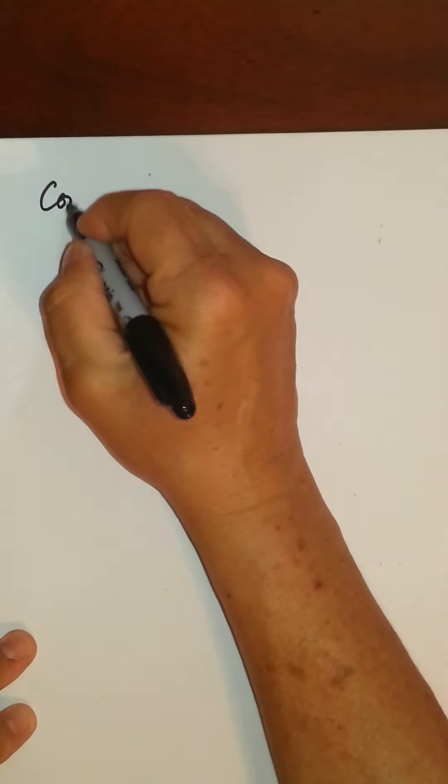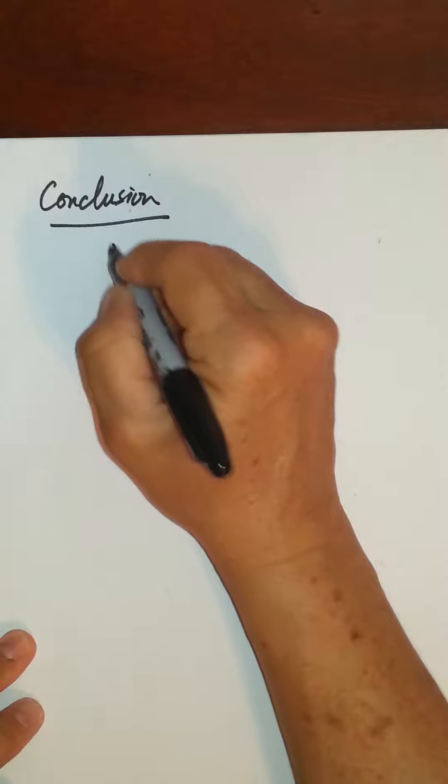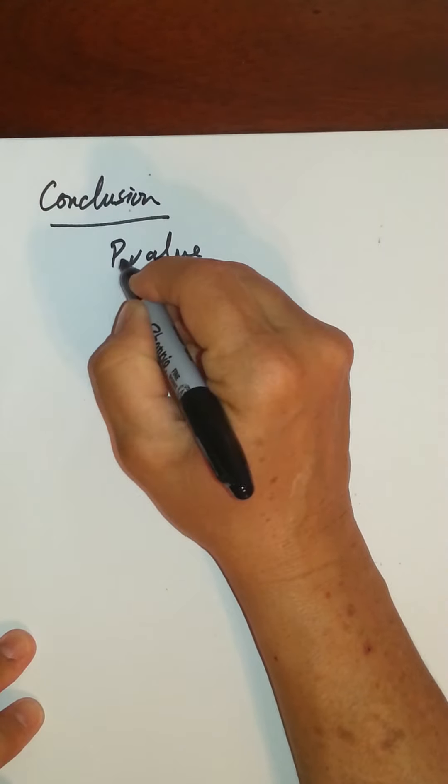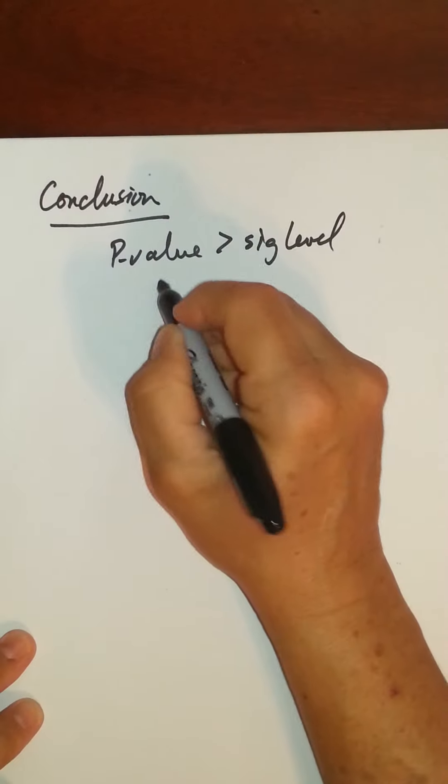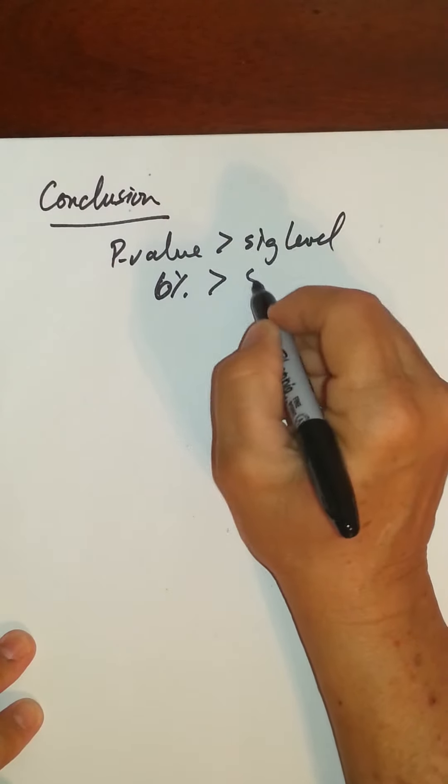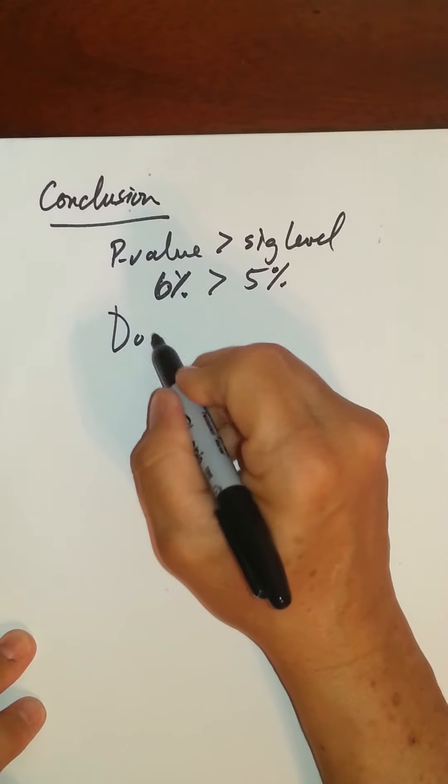So now we're ready to write our conclusion. The p-value is greater than the significance level because 6% is greater than 5%. So I do not reject the null.